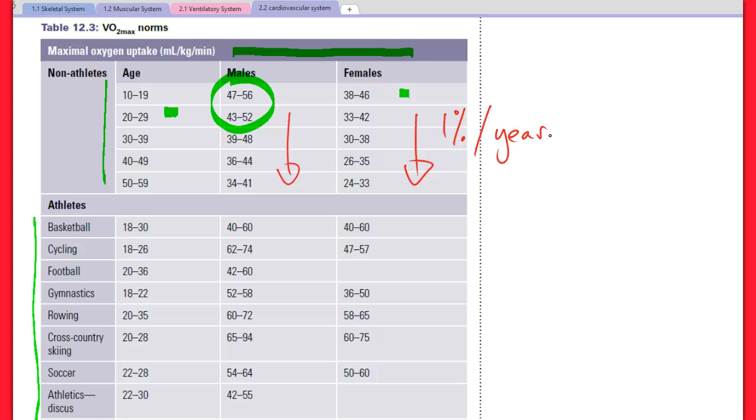Looking across males versus females, males tend to have a higher VO2 max, females a lower VO2 max. If you're looking at absolute VO2 max, it's mainly to do with males having larger bodies in general. However, still when we're looking at relative VO2 max, so with kilograms in the equation, males still do have a greater VO2 max than females.